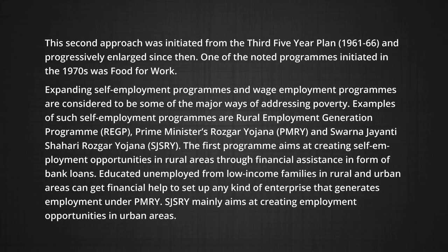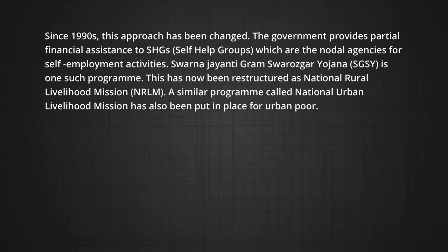The REGP aims at creating self-employment opportunities in rural areas through financial assistance in the form of bank loans. Educated unemployed from lower-income families in rural and urban areas can get financial help to set up any kind of enterprise that generates employment. SJSRY mainly aims at creating employment opportunities in urban areas. Since the 1990s, the government provides partial financial assistance to self-help groups (SHGs), which are the nodal agencies for self-employment activities. Swarna Jayanti Gram Swarojgar Yojana is one such program, which has now been restructured as the National Rural Livelihoods Mission (NRLM). A similar program called National Urban Livelihoods Mission has also been put in place for urban poor.